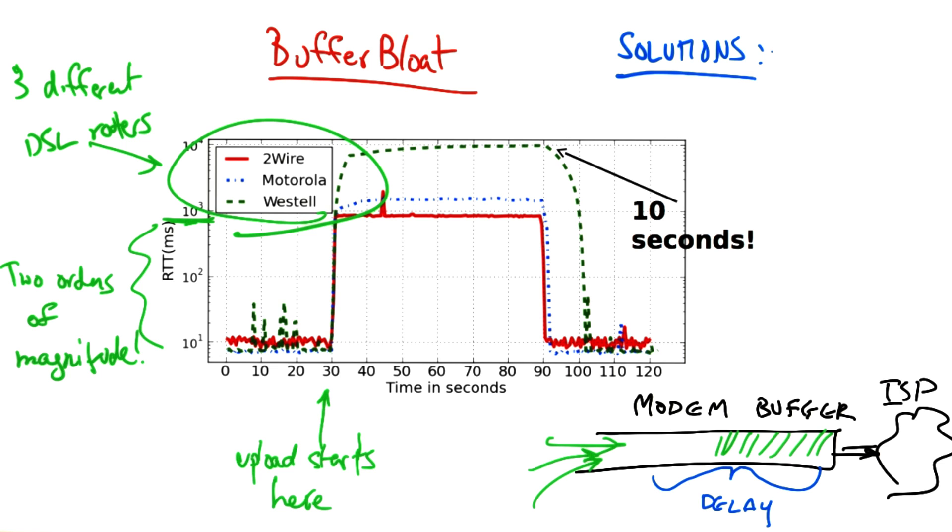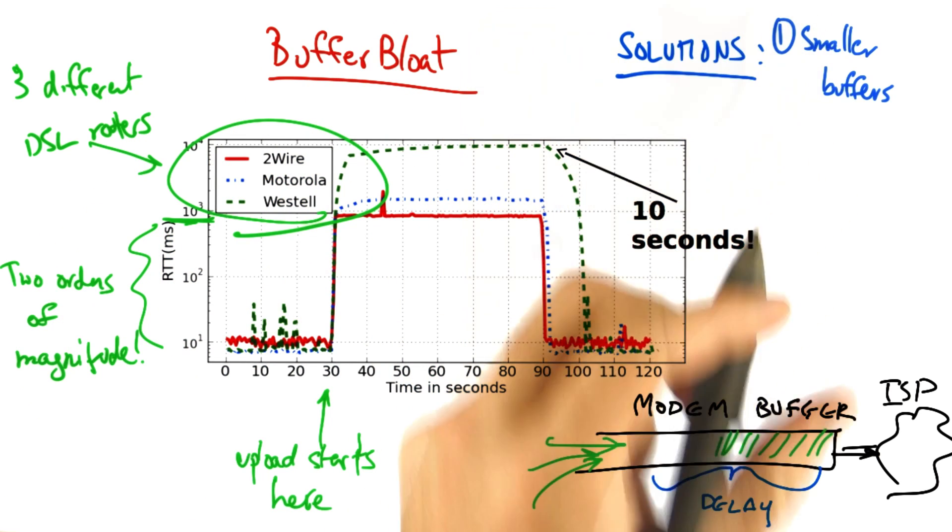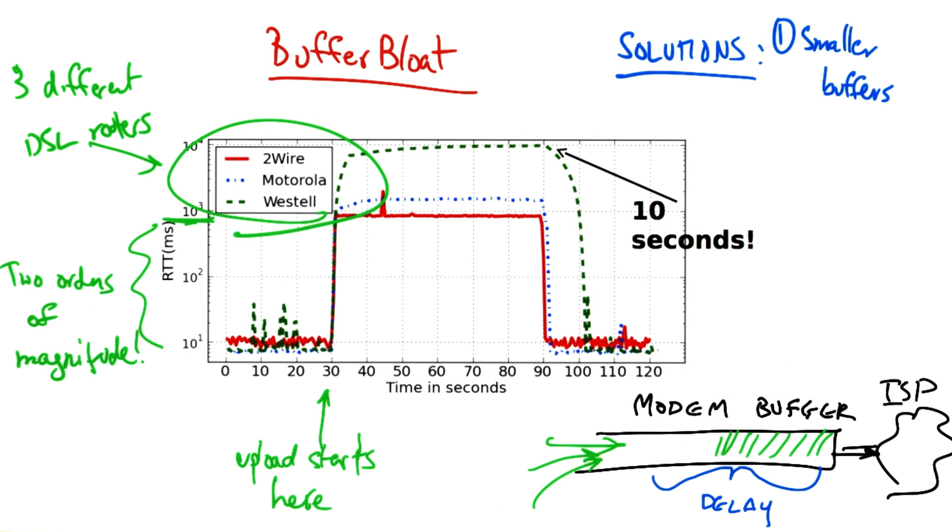There are several solutions to the buffer bloat problem. One is obviously to use smaller buffers. But given that we have a lot of deployed infrastructure, simply reducing the buffer size in deployed routers, modems, switches, home Wi-Fi devices, and so forth, is a tall order.